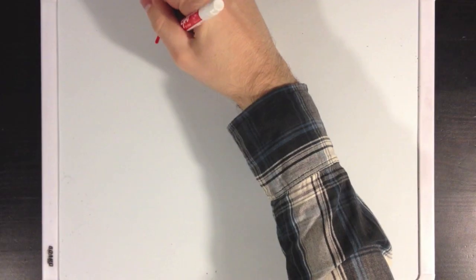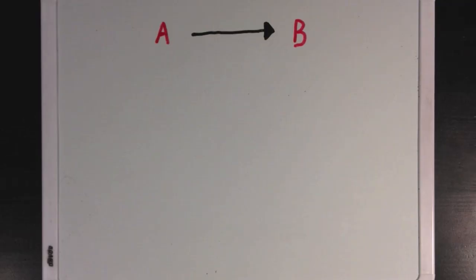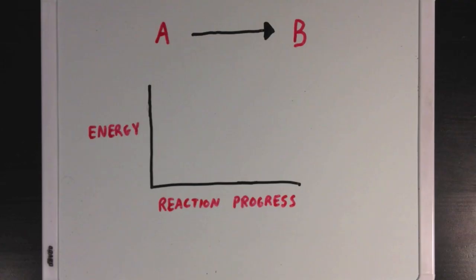So what effect do these catalytic strategies actually have on a reaction? Well, let's look at a sample reaction where we're having molecule A being converted to molecule B. Now, we can look at the process of this reaction using something called a reaction coordinate diagram.